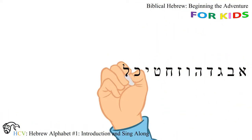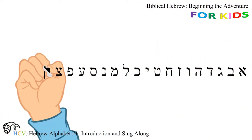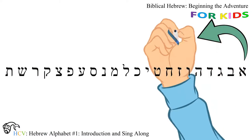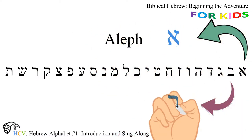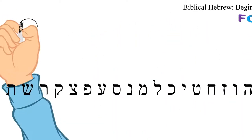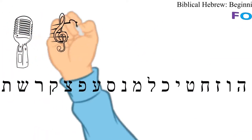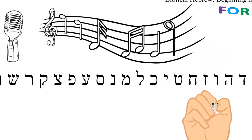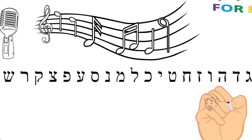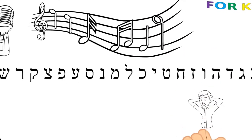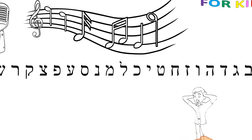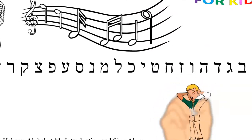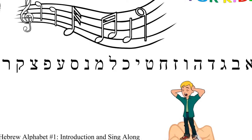The Hebrew alphabet is also called the Aleph-Bet. I'm going to sing, or at least try to sing, the sound and name of the 22 letters. You should join in with me.